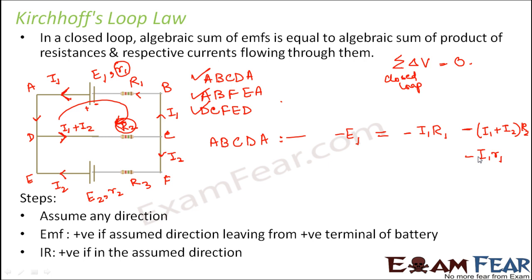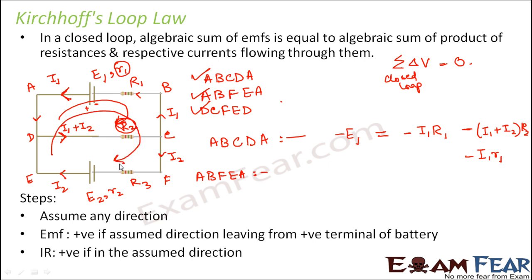Now let us try the bigger loop A-B-F-E-A, which contains two cells and therefore two EMFs. Assuming the same traversal direction: E1 will again be negative (−E1). For E2, the assumed direction is leaving from the positive terminal of the cell, so E2 will be positive (+E2). So the left side is −E1 + E2.